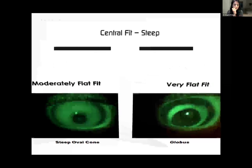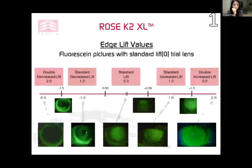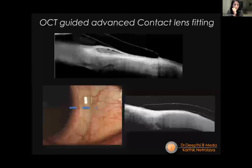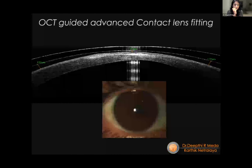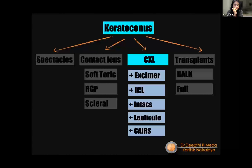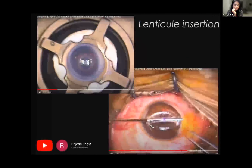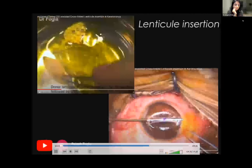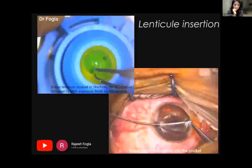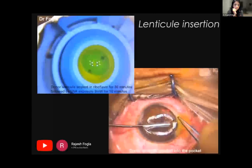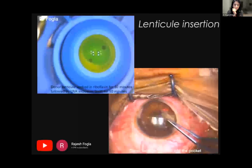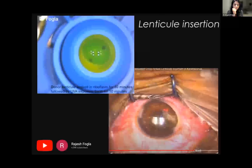Other surgical modalities not being covered in depth here include excimer laser, ICL, and INTACS. However, lenticule insertions and CAIRS are excellent approaches for managing keratoconus. Dr. Rajesh Fogla is shown demonstrating creation of a lenticule using a femtosecond laser, which is then inserted into a lamellar-dissected keratoconic cornea — adding tissue, increasing thickness, and modifying corneal curvature.